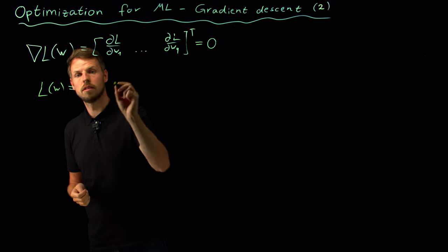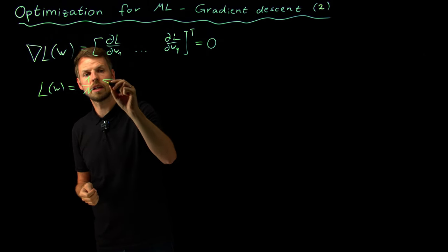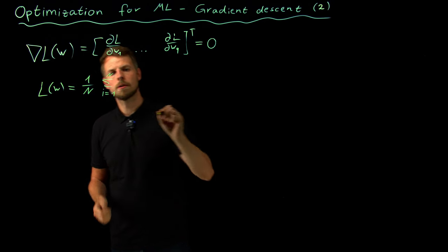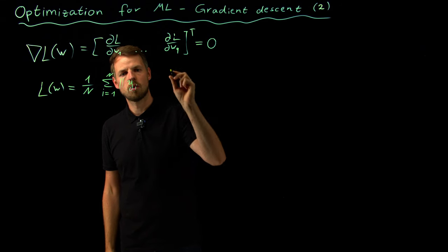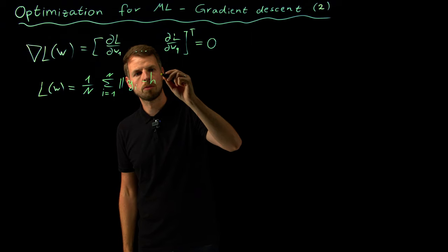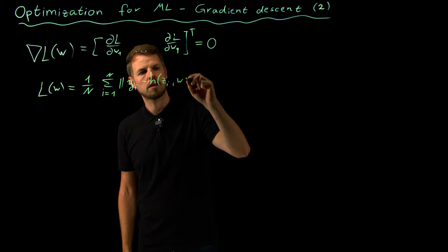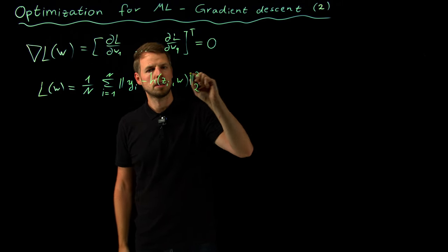Okay, so the loss function we often look at is the squared loss. We take the average over all our capital N samples, and the loss is then the difference between the output y_i and the input mapped through our model, then usually in squared form.